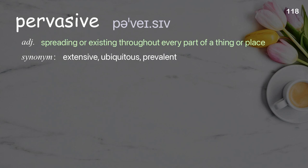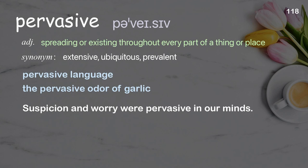Pervasive: spreading or existing throughout every part of a thing or place. Examples: pervasive language; the pervasive odor of garlic. Suspicion and worry were pervasive in our minds.